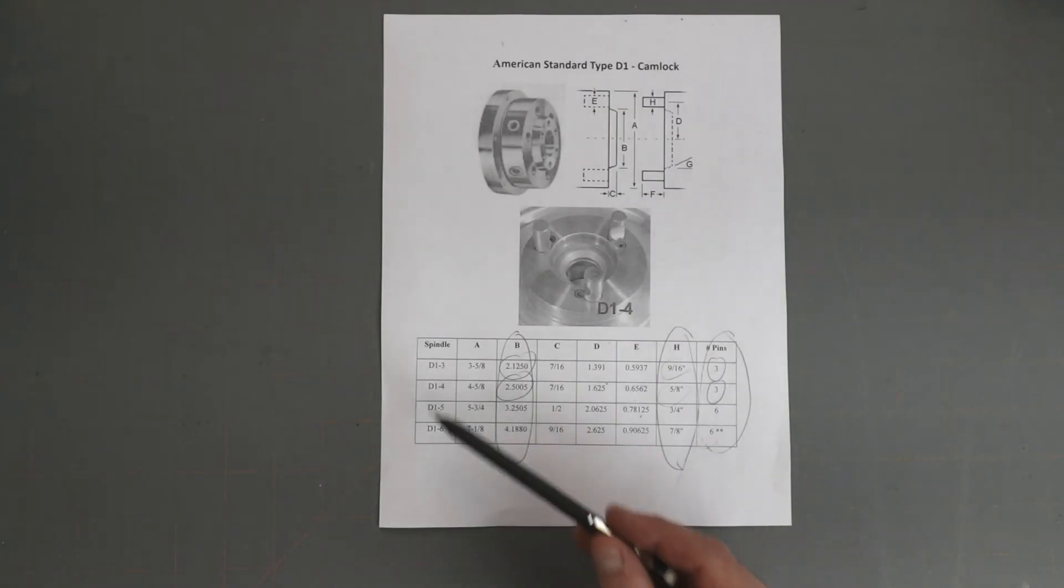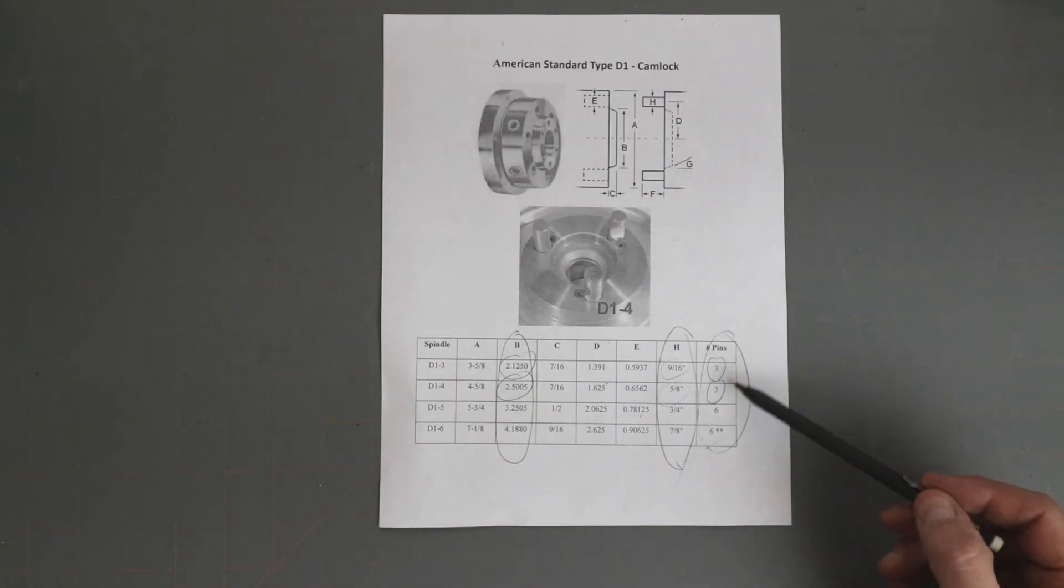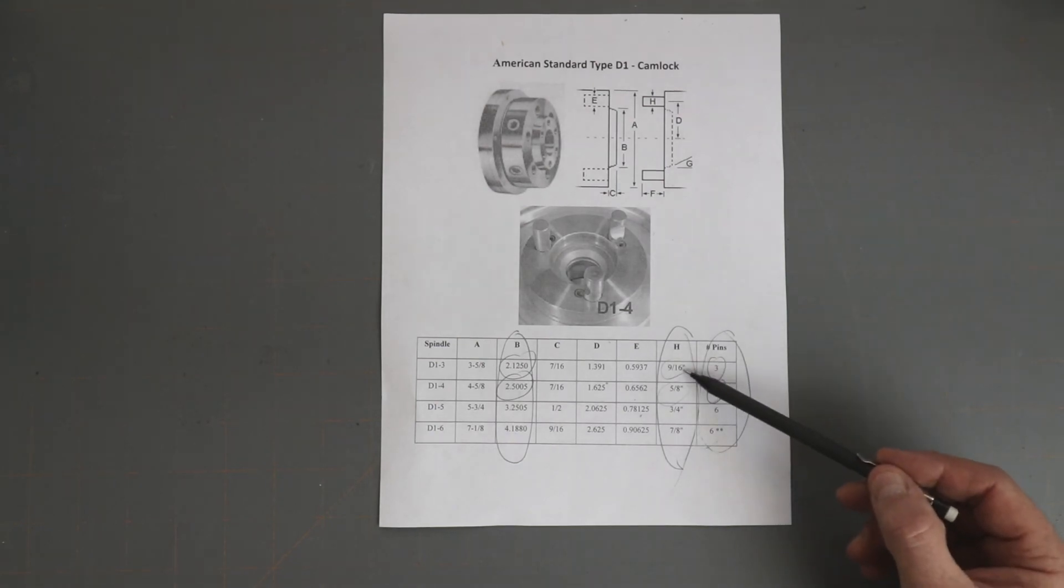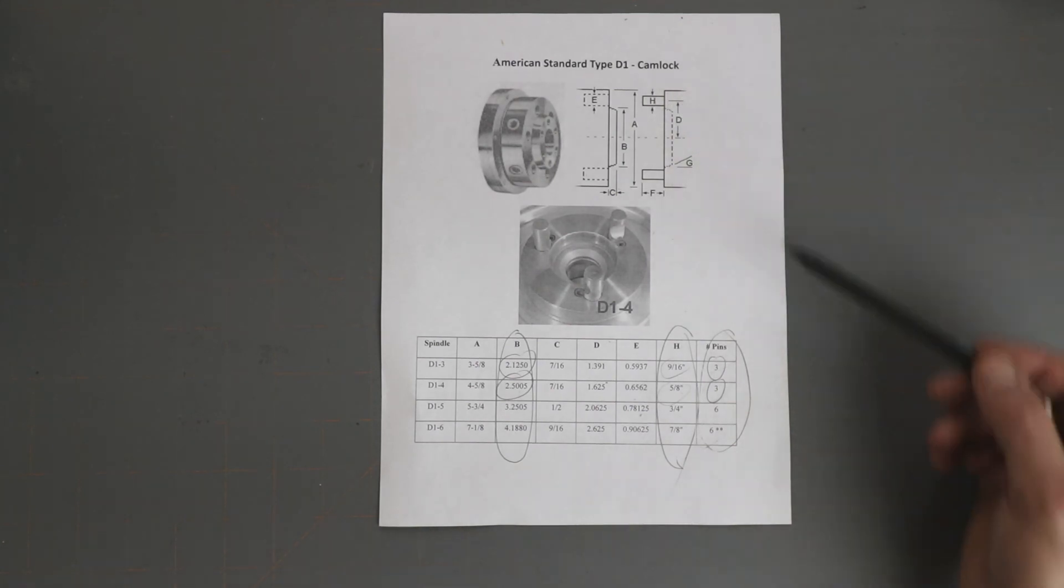It's the D1-3 and 4 that there could be some confusion, given that they're both three pins. But the chart here clearly shows 9/16 and 5/8 for measurement H, and that's the diameter of the pin.